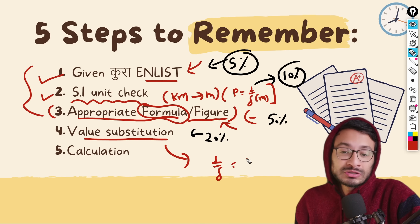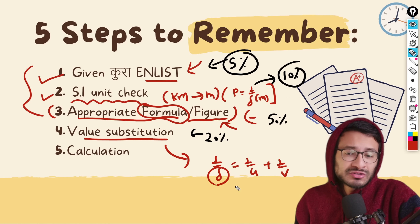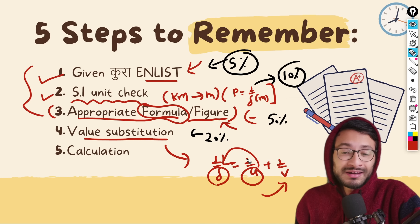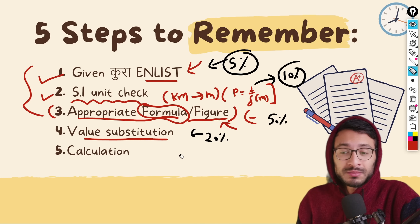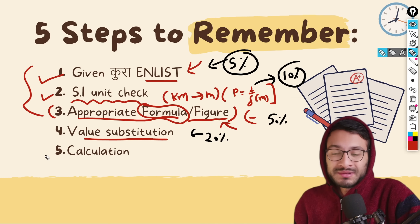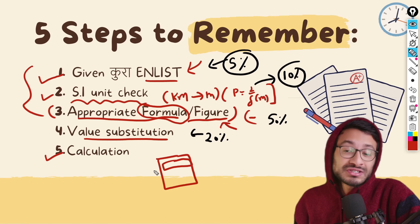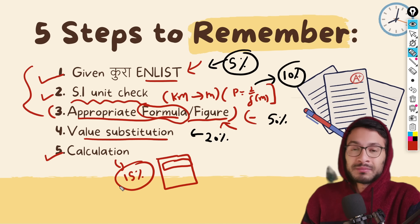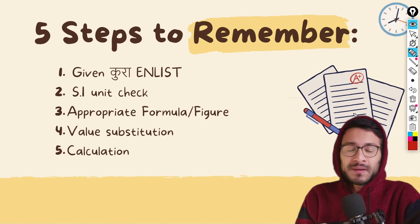For example, 1 by f equals to 1 by u plus 1 by v — students make value substitution mistakes here, confusing the f value, v value, and u value. This is a minor mistake, but it is the most common last mistake in numerical problems.